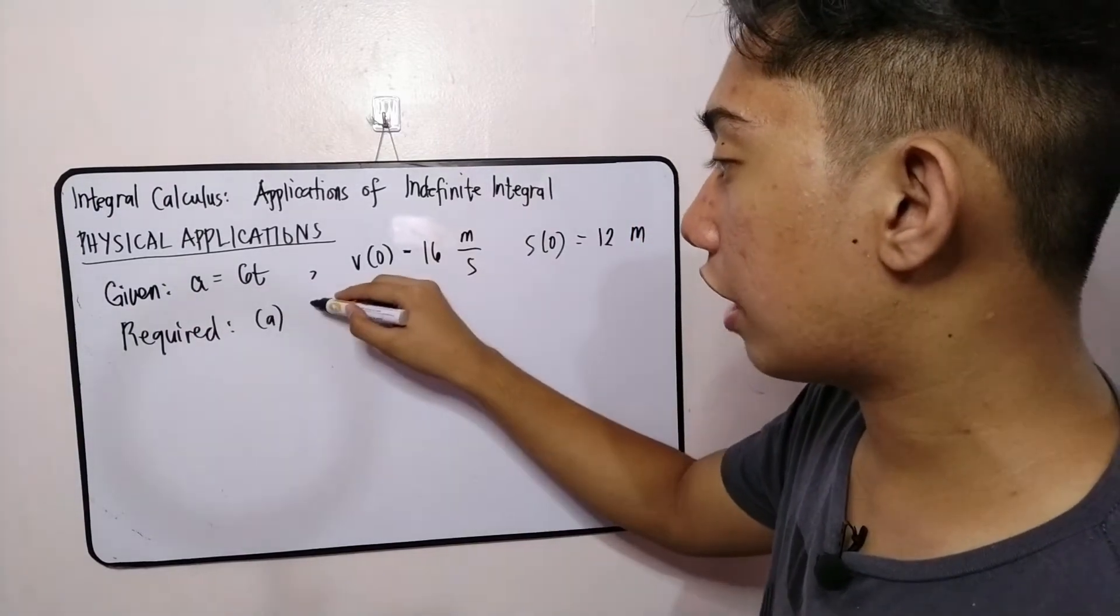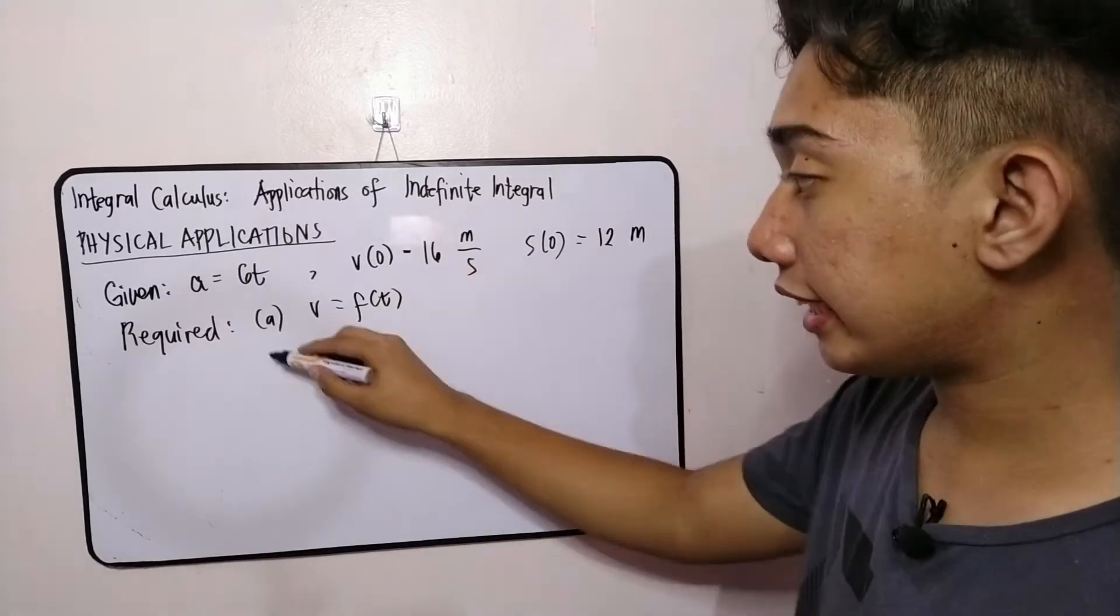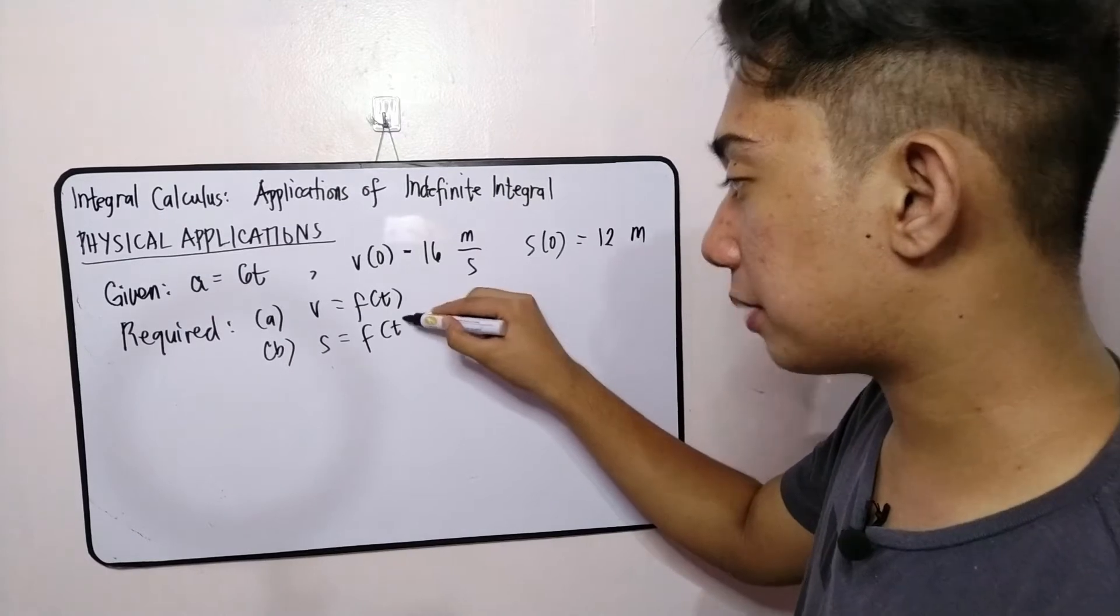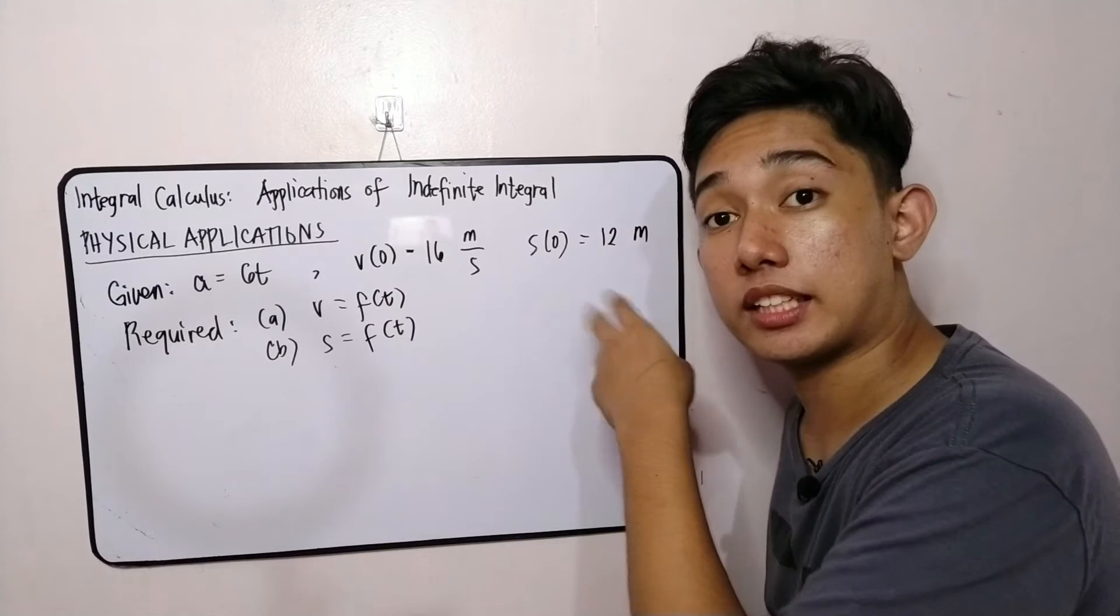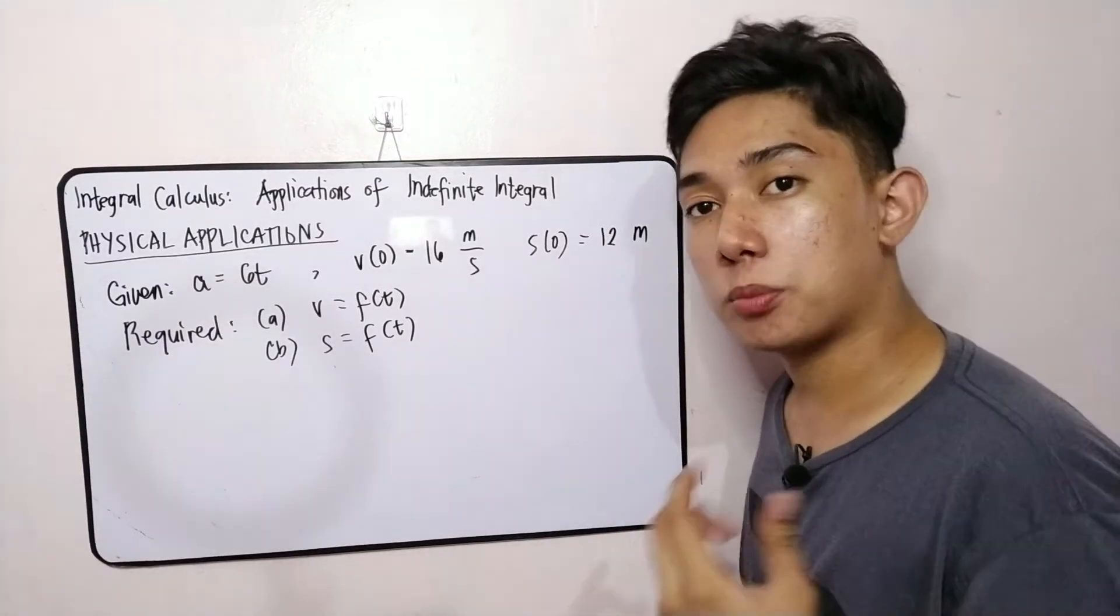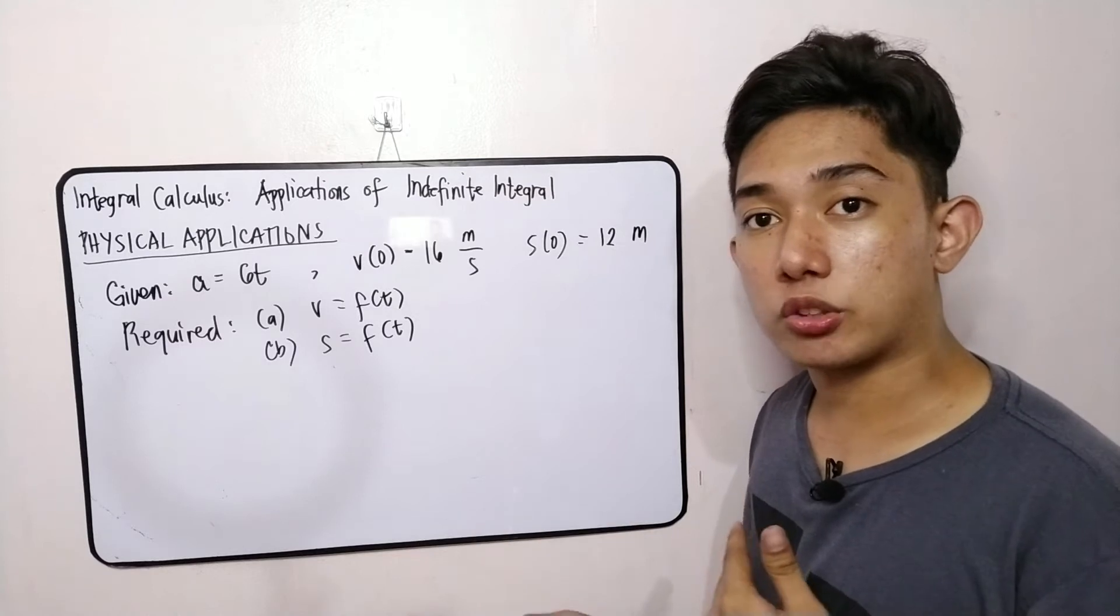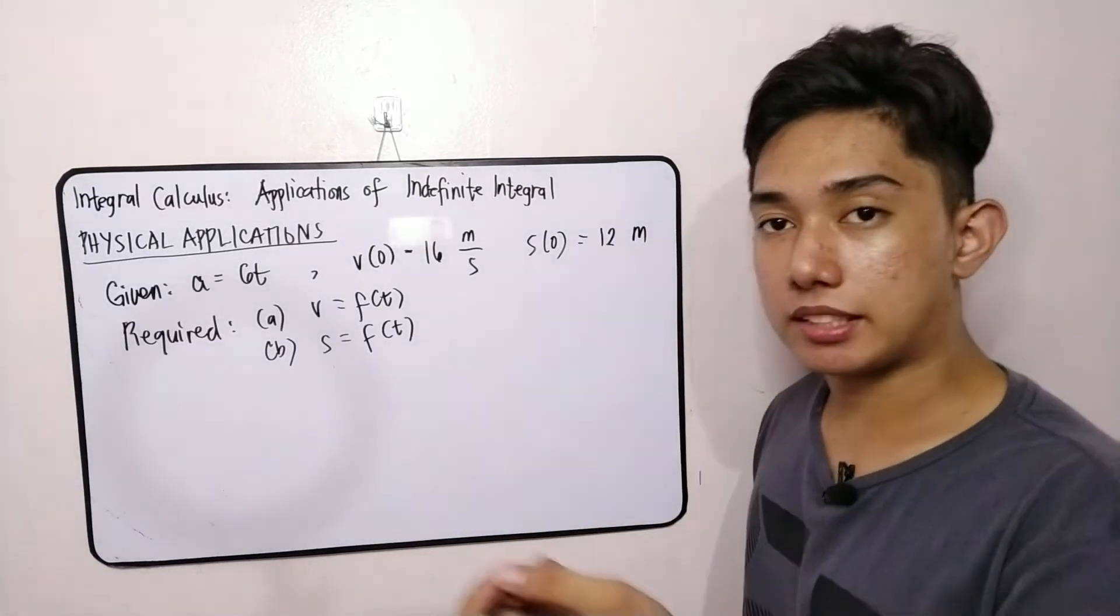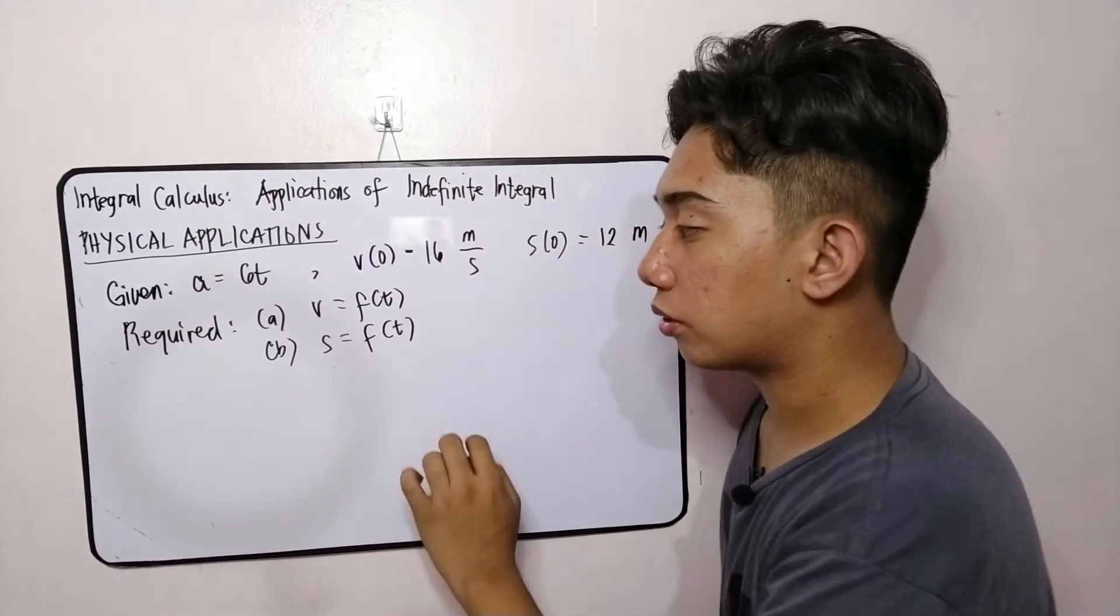This is our required. First is the velocity function at any time t. And the distance function or the displacement function. Kasi nag-gamit tayo ng acceleration, this is velocity, and you expect this is a displacement. To be parallel on the law of physics in which if all the terms are vector, then vector lang dapat ang gamitin natin para mas madali. Kasi sa distance, scalar kasi yung distance. So s is equal to the function of t.